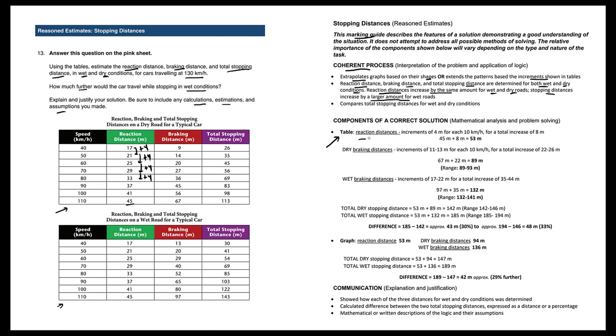So look at the table. As for reaction distances, the reaction distance increases by 4 meters for each speed change of 10 km an hour. Over here, plus 4, plus 4, plus 4, and the speed's going up by 10s: 40, 50, 60, 70, etc. So we're interested in 130 km an hour, so we go two more steps, and so we keep on adding 4.